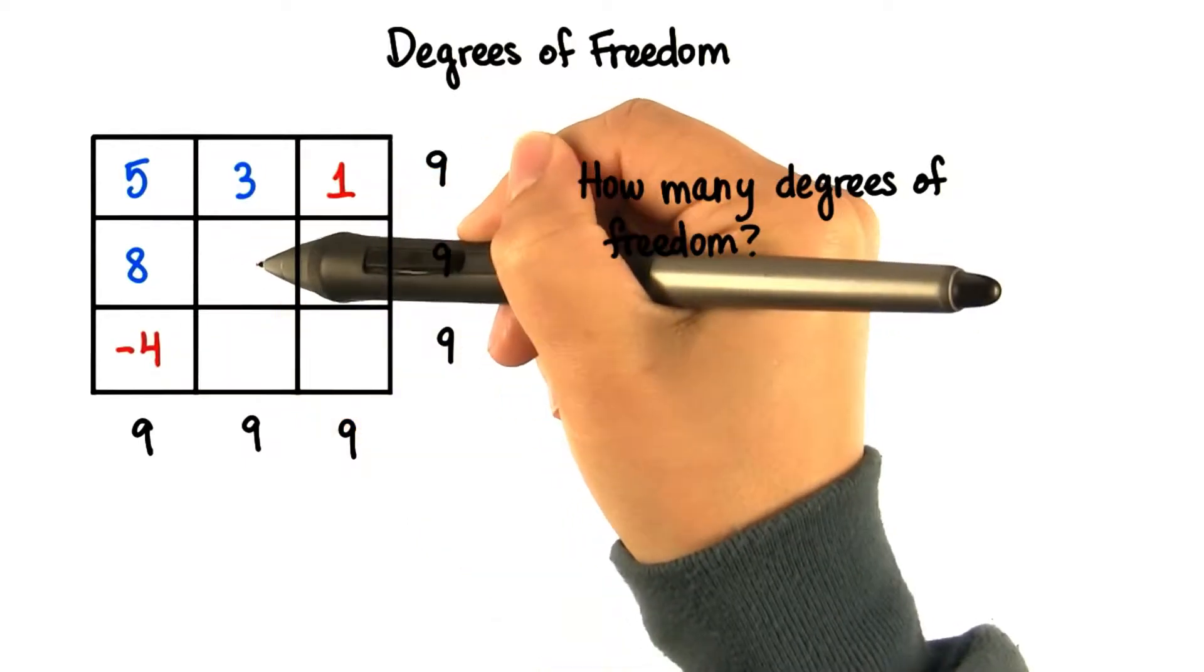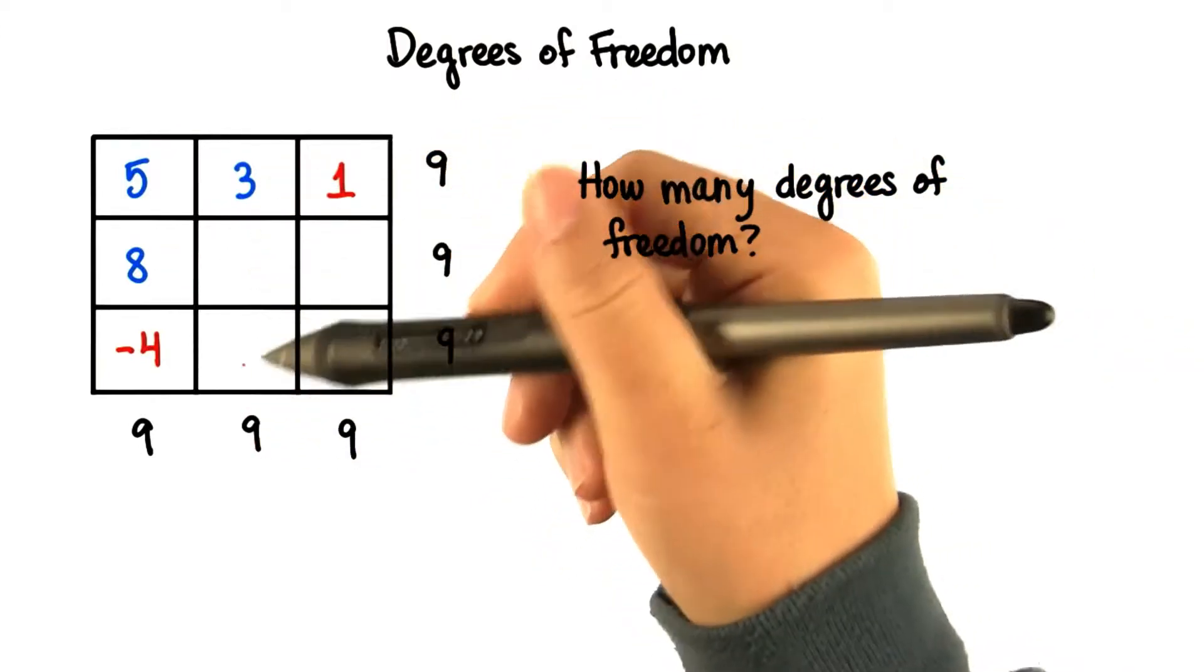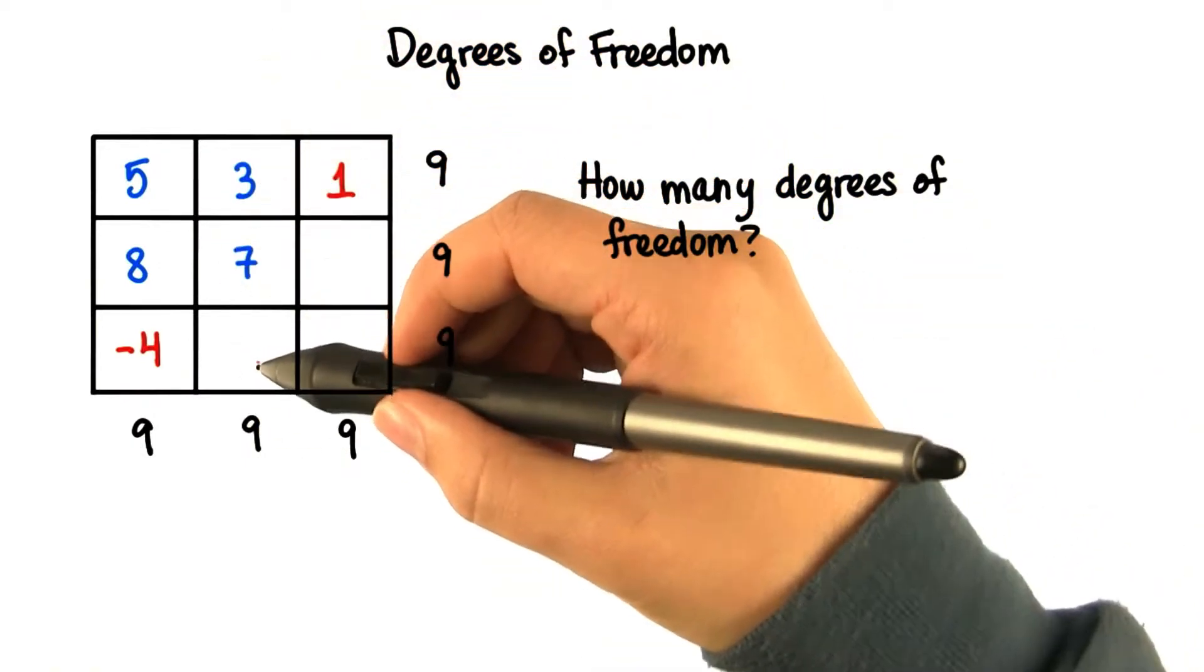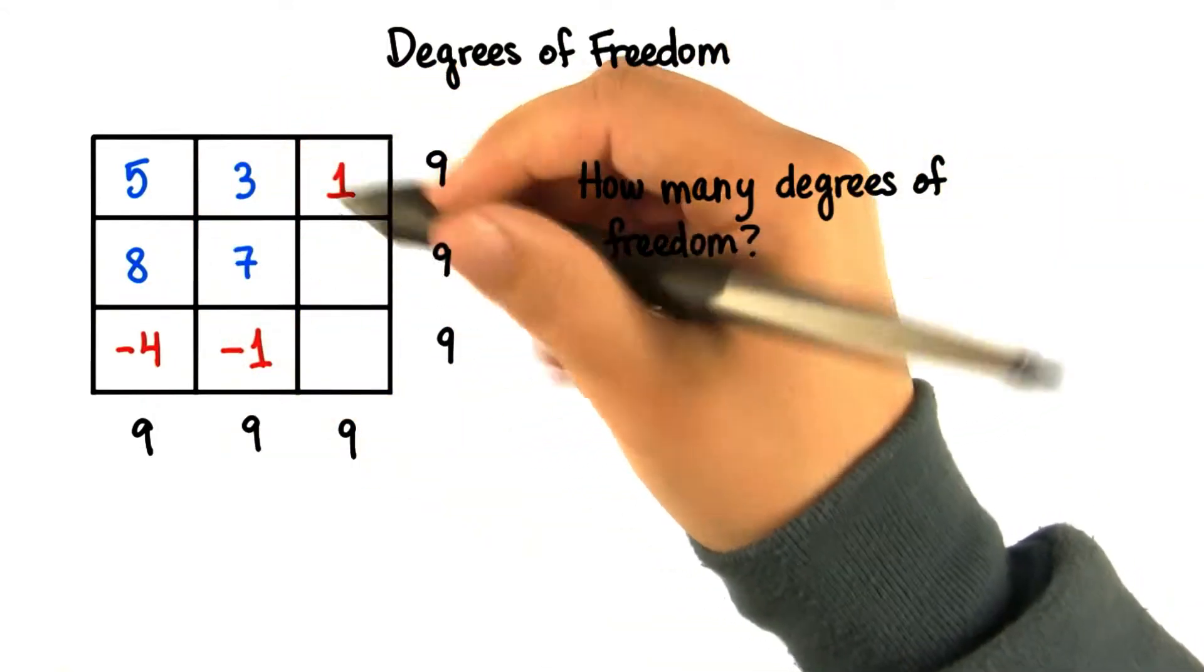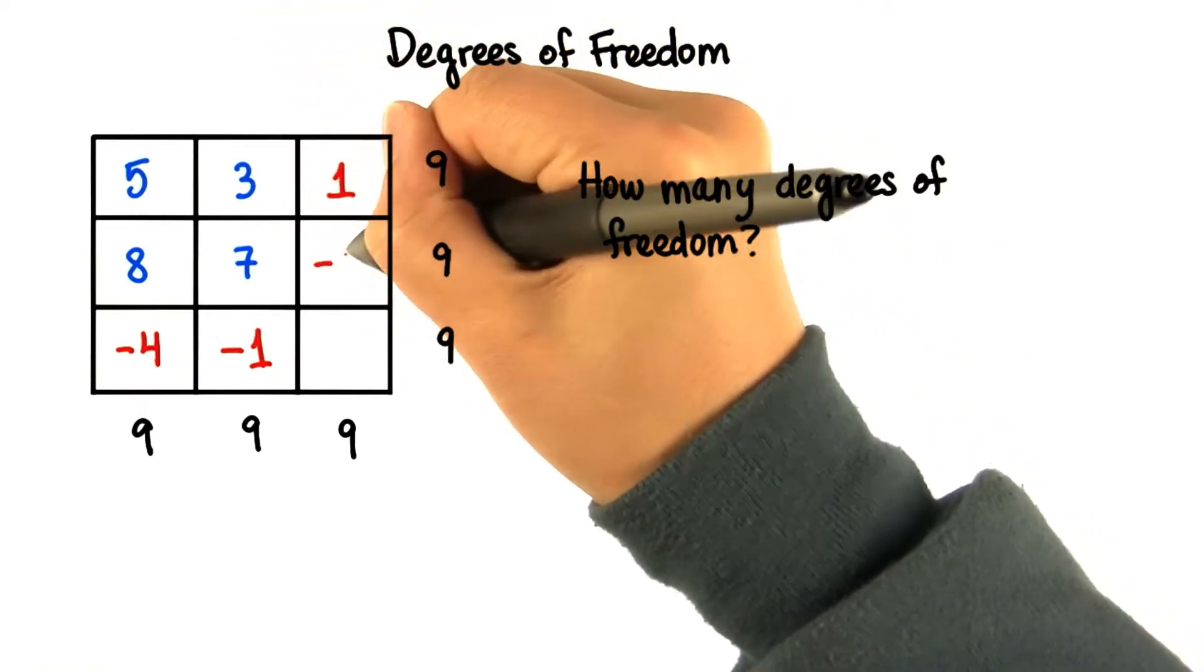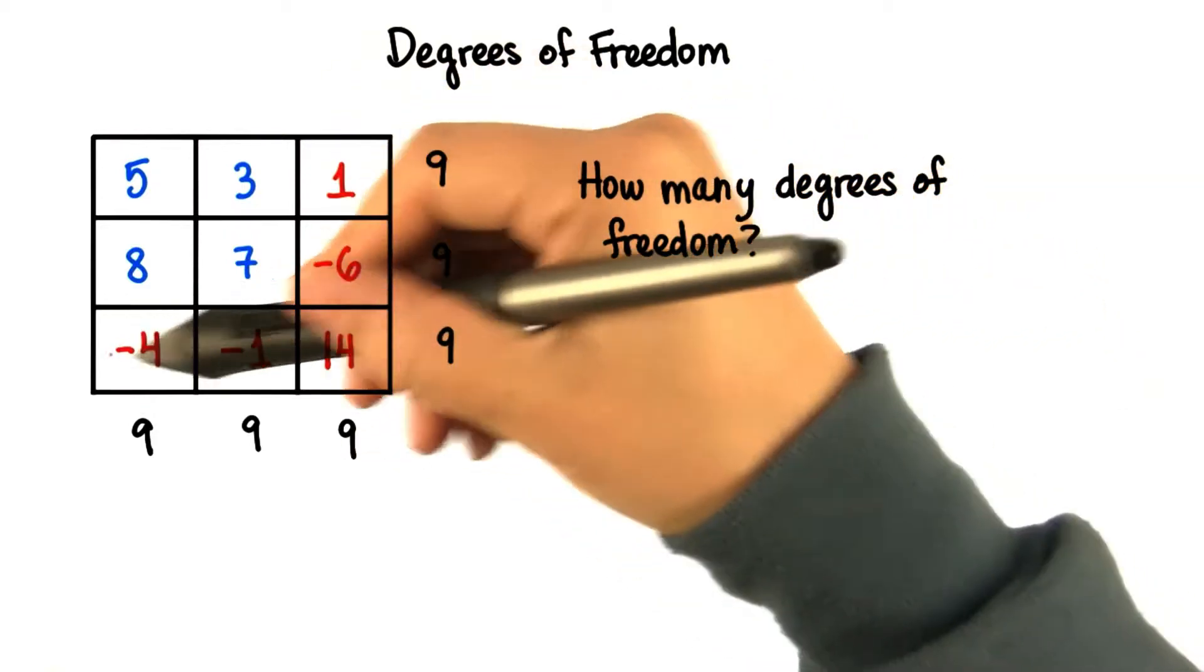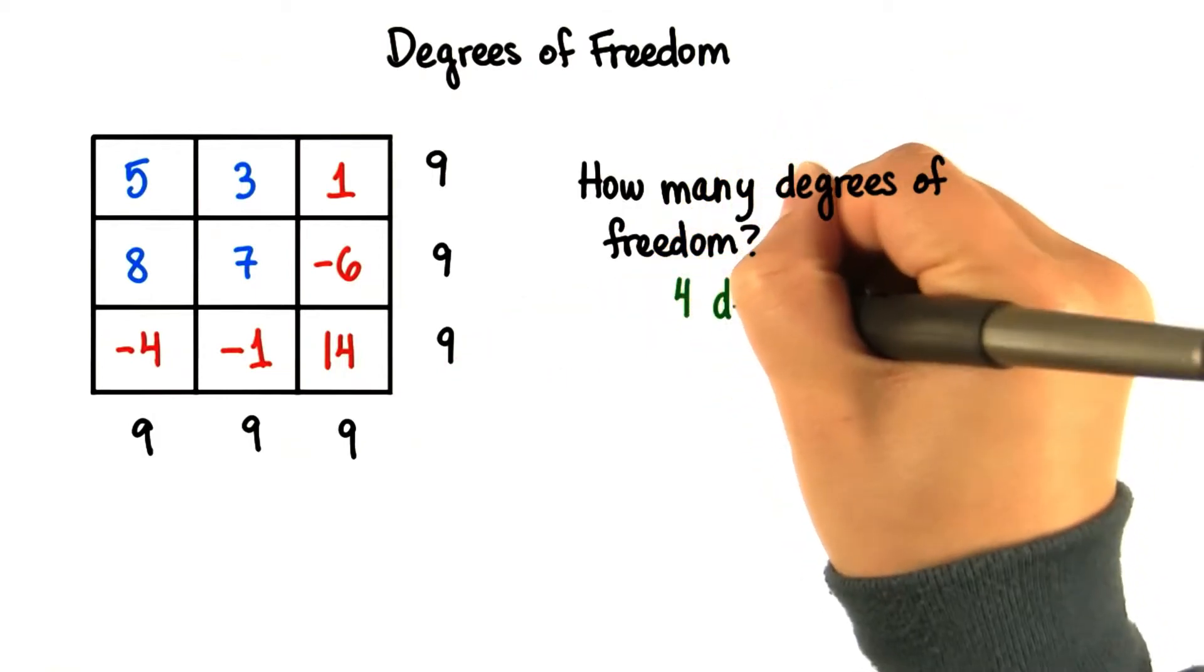Can we pick a value here and have this row and this column still sum to 9? Yeah. Let's say 7. Now if this column has to sum to 9, then this entry is forced. It's negative 1. And as you can see, this entry is forced too. This adds to 15, so to add to 9, this should be negative 6. And then this entry is forced as well. This has to be 14. Then both this column and this row sum to 9. So in this case, there are 4 degrees of freedom.